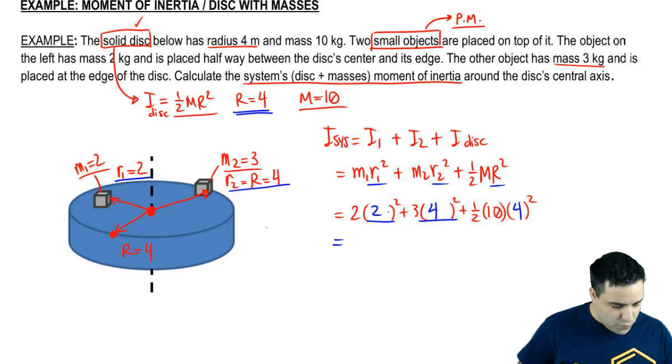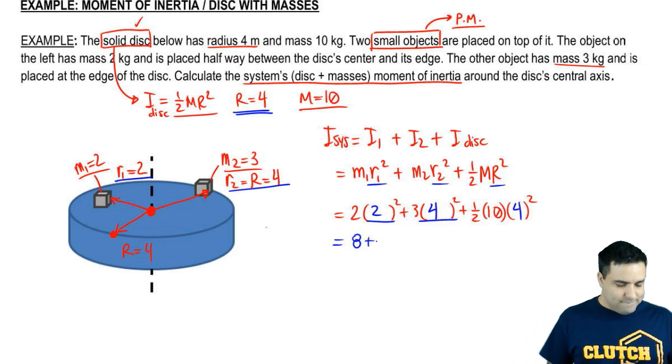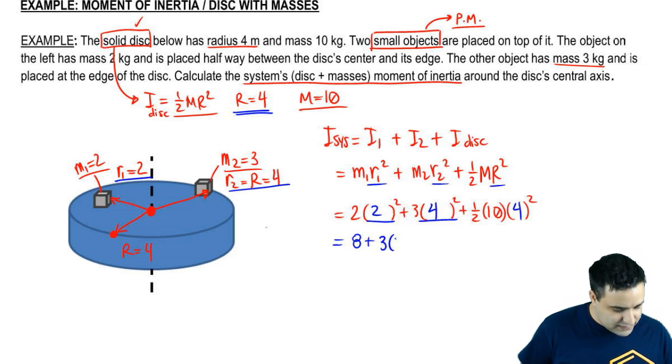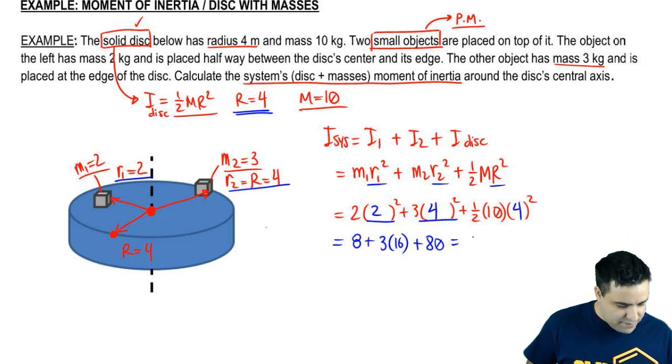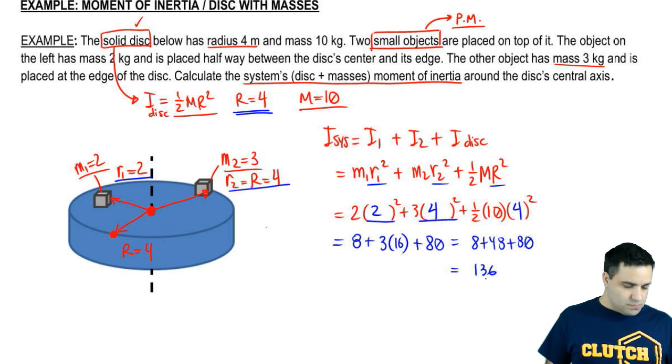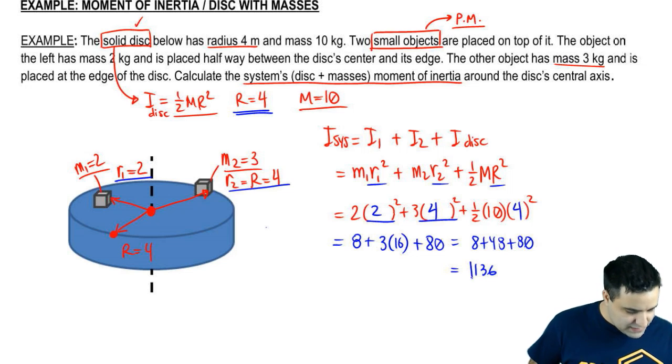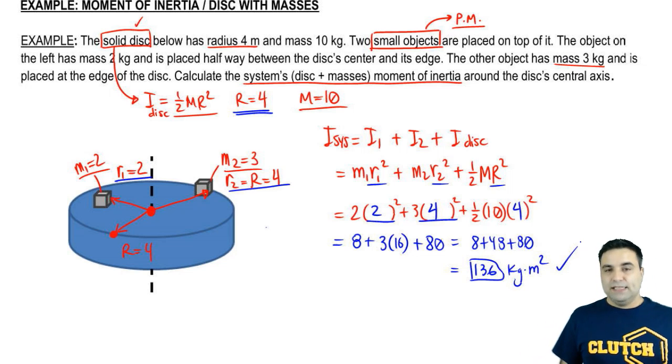So let's just do this real quick. This is going to be 8. This is going to be 3 times 16, so that's 48. And this is going to be 80. So we have 8 plus 48 plus 80. And this is going to be 136 kilograms meter squared. That's it for this one. Hope you got it. Let me know if you have any questions.